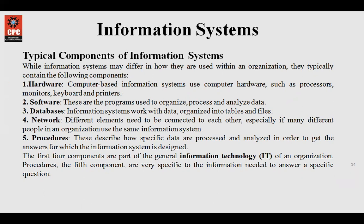The first four components — hardware, software, databases, and network — are part of the general information technology of an organization. Every system in the IT sector requires a computer, software that is running, a database to handle all the organization's data, and a network. Network is essential: it is what helps us to communicate, exchange data, and connect to the internet.